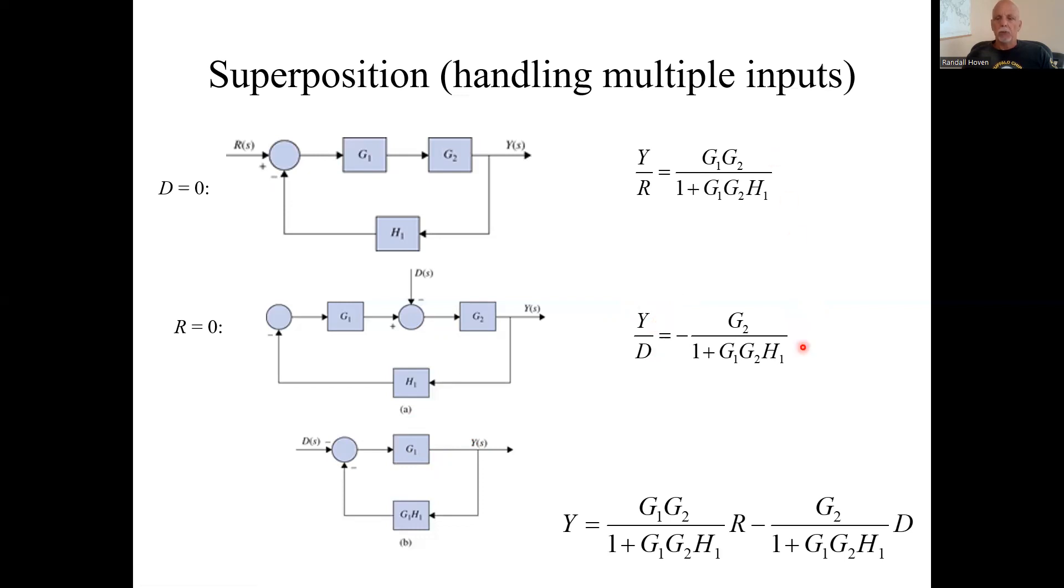Then this is equivalent. So here's the transfer function just from the disturbance D to Y. We have those two individual transfer functions. The total output is the sum of the two individual outputs. This output Y is this transfer function times R, and this output is this transfer function times D. Those are the individual outputs. Another signal is set to zero, so the total output, add these two values. Anyway, that's what superposition is.